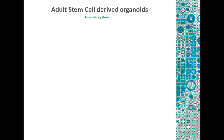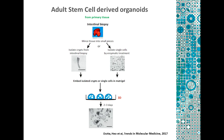The adult stem cell organoids are somewhat more defined, because they are already isolated from the tissue of origin. For example, what I'm showing you is an intestinal biopsy. What we do is we get a biopsy, we mince the tissue into small pieces, and then we either isolate the crypts from the intestine, or we make them into single cells, which are then plated in 3D in matrigel, which is an extracellular matrix. Within two to three days, we already see these organoids growing. Most of the work I show today is based on the adult stem cell-derived organoids, which we use in the Clevers lab for all our studies.